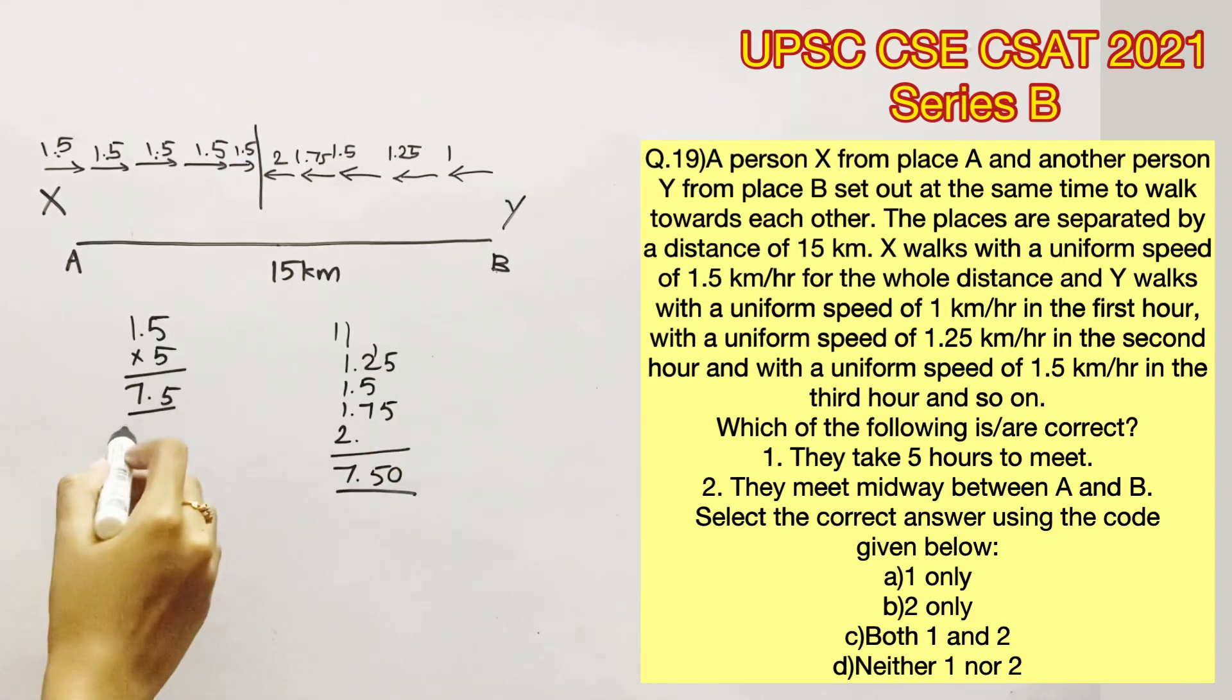Now if you add both these values, you will get 7.5 plus 7.5 equals 15 kilometers. So for 5 hours, each has traveled 7.5 kilometers and has reached the midpoint.